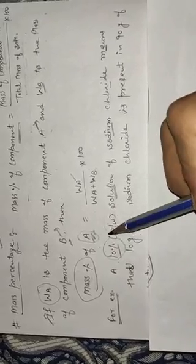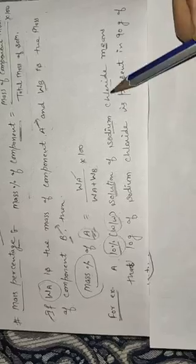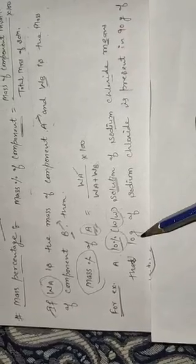This is an example of 10% solution W by W, which means weight by weight of sodium chloride. If we have a solution of 10% W by W of sodium chloride, what it means is that 10 grams of sodium chloride is present in the solution.